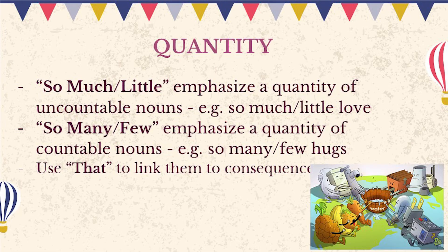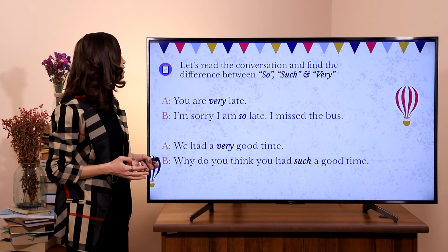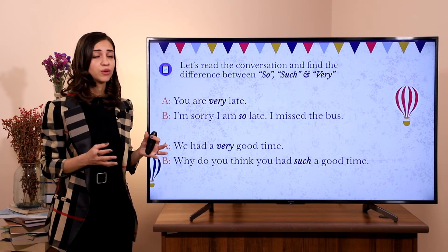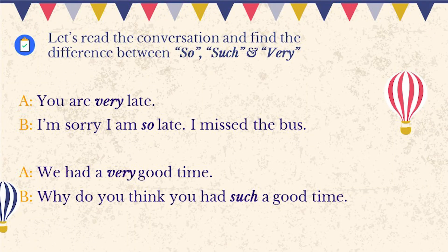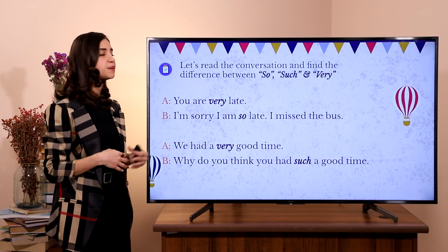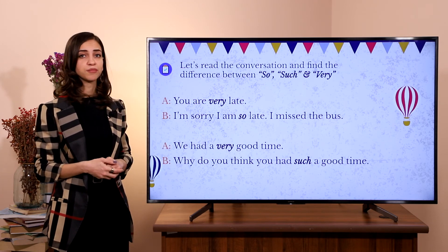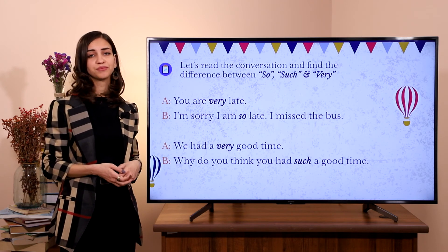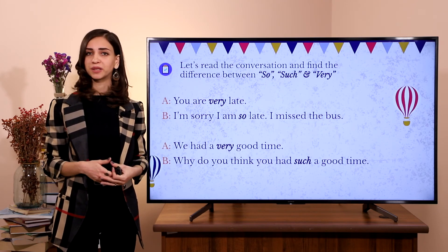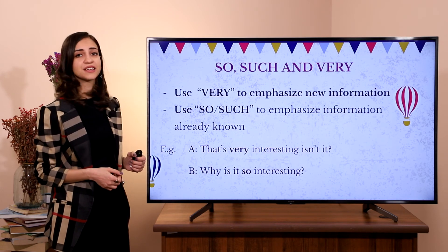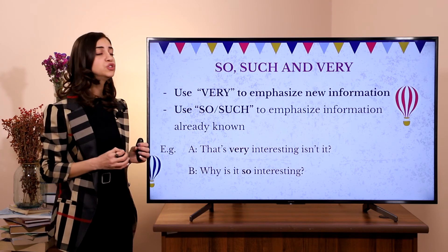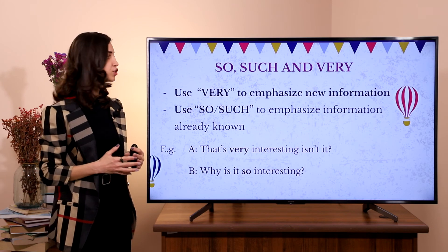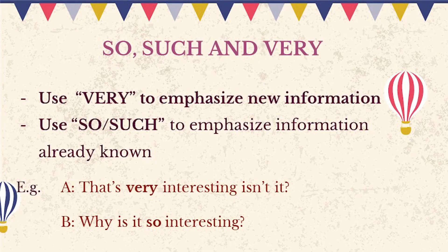Now let's read the conversation below and understand the difference between so, such, and very. 'You are very late.' 'I'm sorry, I'm so late. I missed the bus.' 'We had a very good time.' 'Why do you think you had such a good time?' We use 'very' to emphasize new information, and we use 'so' and 'such' to emphasize information already known to a person. For example: 'That is very interesting, isn't it?' — 'Why is it so interesting?'